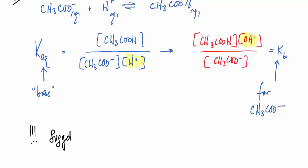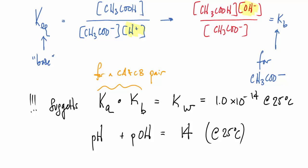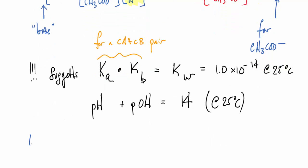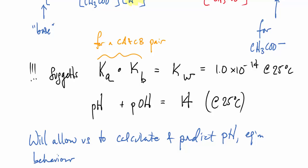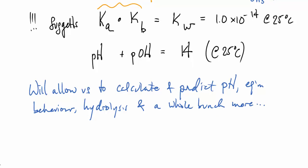And that is, of course, at 25 degrees Celsius. Now, this suggests that Ka times Kb should be equal to Kw, the leveling effect we saw before. Notice also, pH plus pOH equals 14. So here we have the conjugate acid-base pair relationship, where the Ka for the conjugate acid and the Kb for the conjugate base multiply together, making Kw for water. Now, this fact will allow us to calculate and predict pH, equilibrium behavior, hydrolysis, and really a whole bunch more. We're going to come back to it very soon. In fact, in our next lesson.